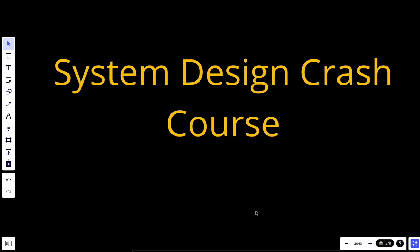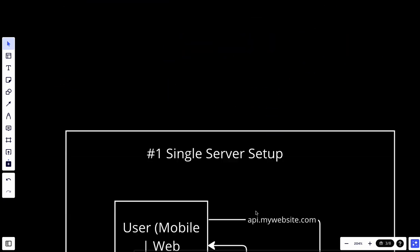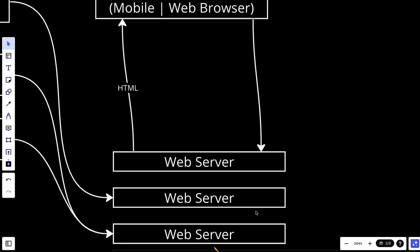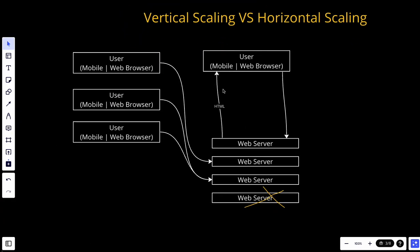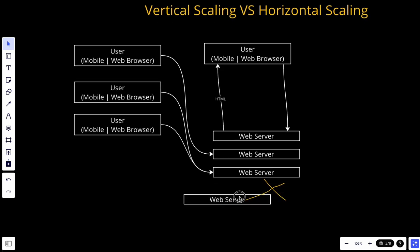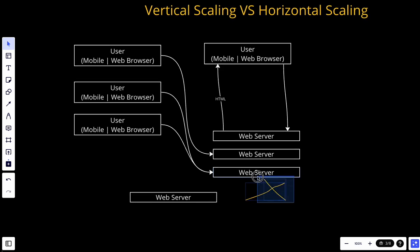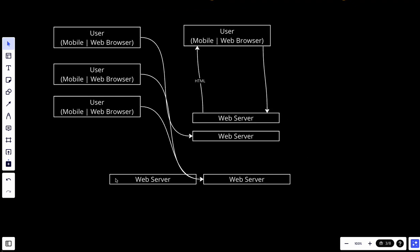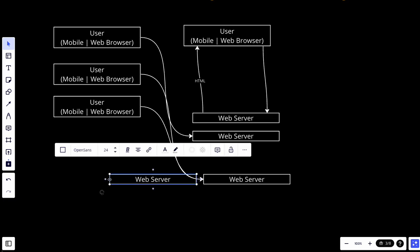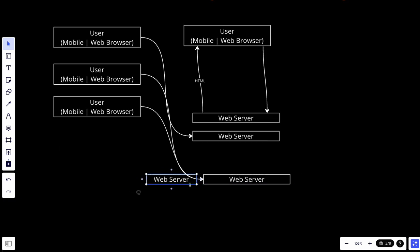Hey YouTube, welcome back. Today we have a new video in the system design crash course. Today we will talk about the load balancer. In the previous video we talked about vertical scaling and horizontal scaling. Vertical scaling, or scale up, is to add more resources, and horizontal scaling, or scale out, is to add more machines. We will use horizontal scaling, so basically we'll try to use more machines as we go.